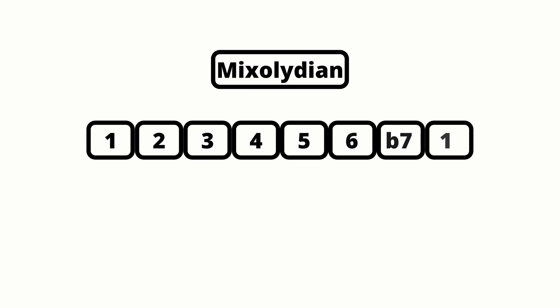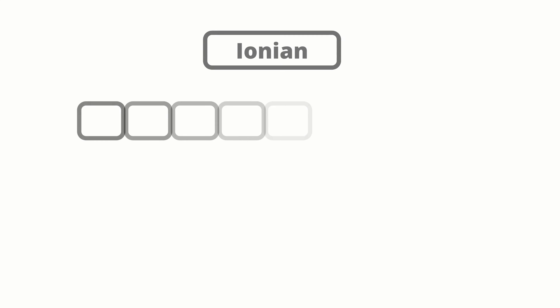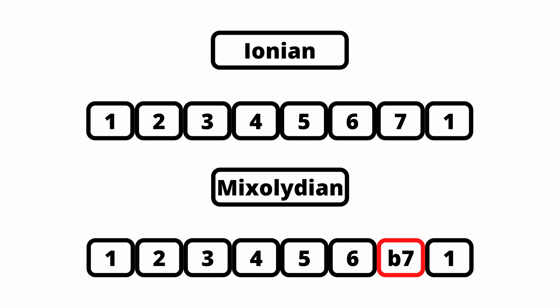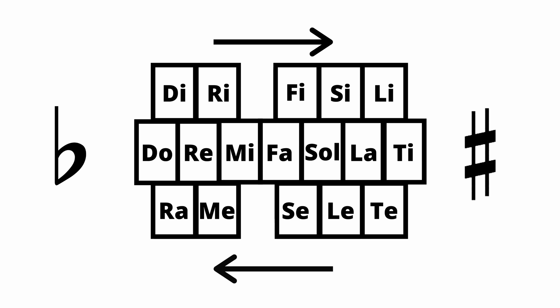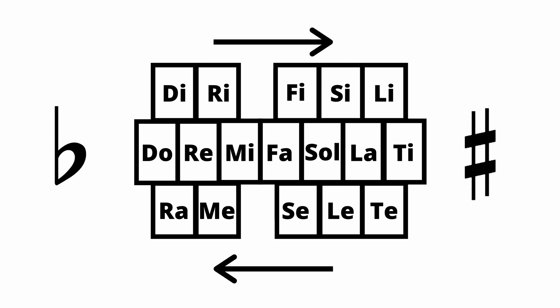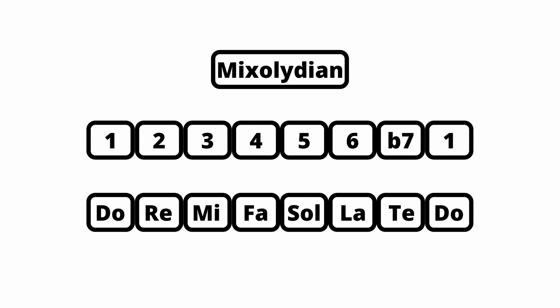Then we are going to learn the Mixolydian mode. The formula for the Mixolydian mode is 1, 2, 3, 4, 5, 6, b7, 1, which makes it very similar to the major scale. As you can see, the only difference is the flattened 7th degree. This knowledge will help you recognize this mode when you hear it. In solfège, since we have a flat 7, instead of singing Ti, we would replace that syllable with Te. This is how we would sing the Mixolydian mode in solfège.